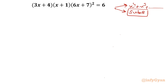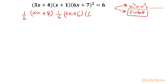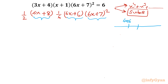I want to show you something interesting. If I take the term (3x + 4) and multiply by 2, I get 6x + 8. Similarly, multiplying the second bracket (x + 1) by 6 gives 6x + 6. Now you can see on the number line: 6x + 6, 6x + 7, then 6x + 8 — three consecutive terms.